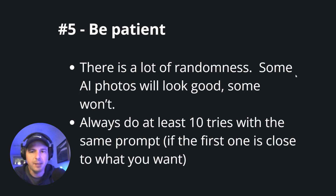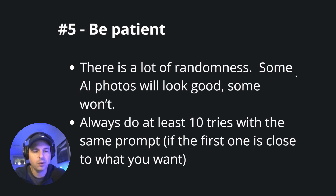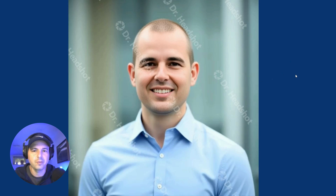The last thing is to be patient. There's a lot of randomness — it's like rolling dice. Some AI photos will look good, some won't, even with the same prompt. If you get an image that looks okay, run the same prompt at least ten times. Due to the randomness, at some point you'll get a photo that looks exactly how you want. If the first result is clearly wrong, adjust the prompt — but if it's close, just run it again and pick the best one from the variety.